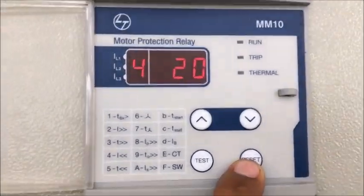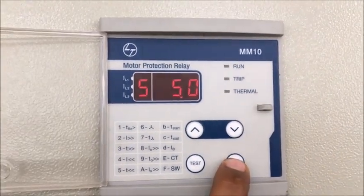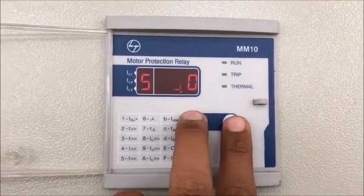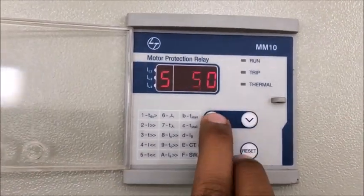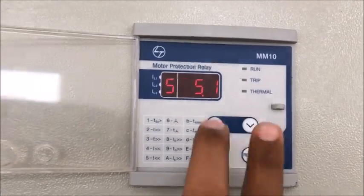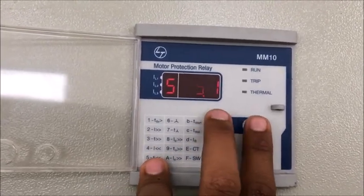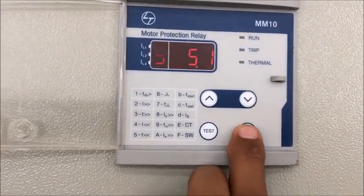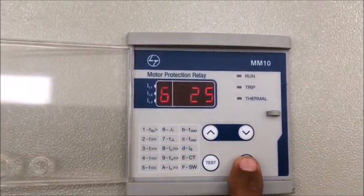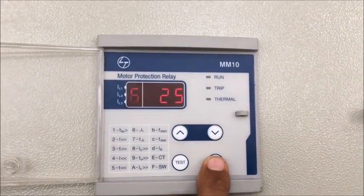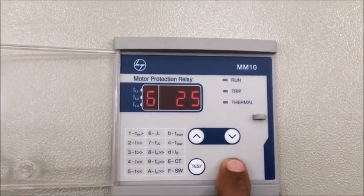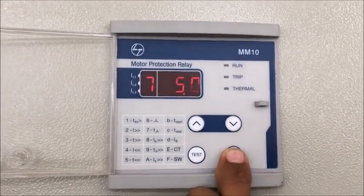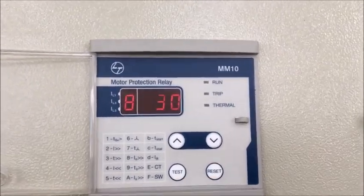Number four is for undercurrent, I less than less than which is undercurrent. Number five is undercurrent delay time. You can change accordingly. Number six is the unbalance which is star is rated. In unbalance condition you can increase the values. Then unbalance delay time.